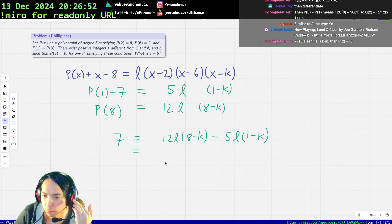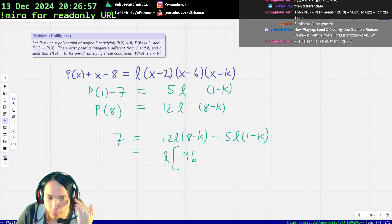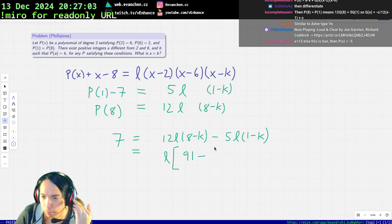Okay, we factor out l and it's 91 minus 7k.